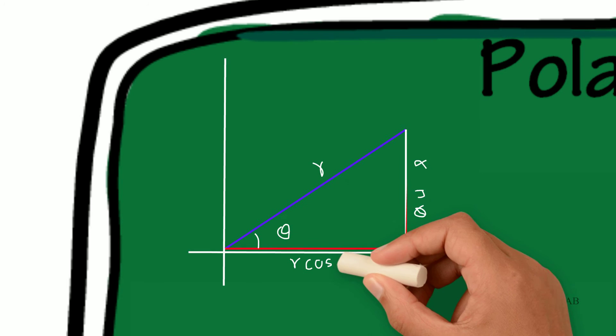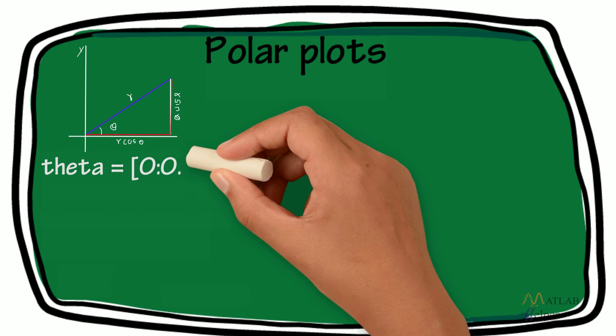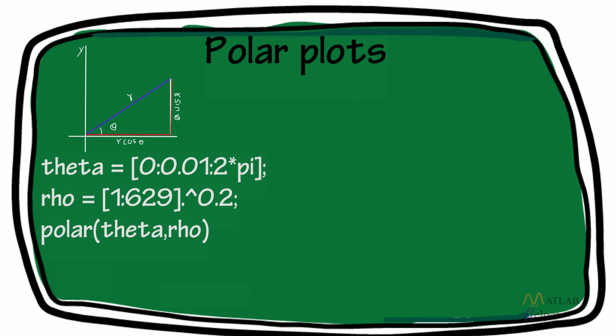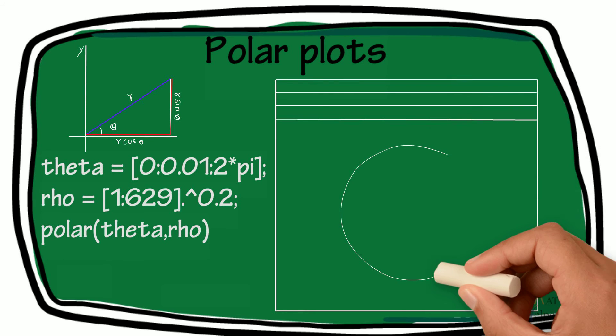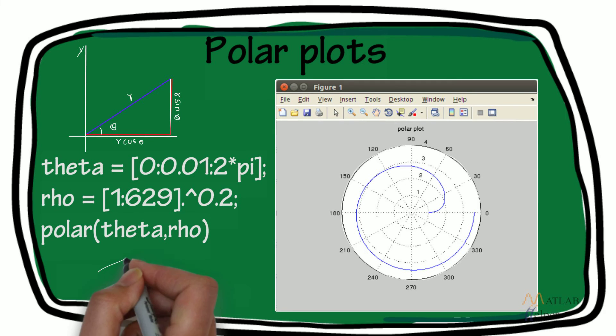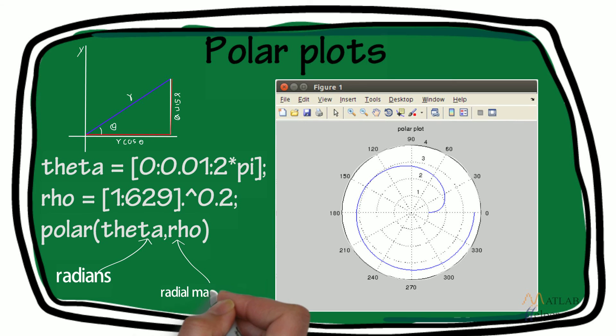Polar plots: Some data is better presented in the form of polar coordinates in two dimensions. For that purpose, polar plots can be used. The function polar needs polar coordinates as inputs and will display the corresponding plot. In the theta-rho pair as input, theta needs to be specified in radians and rho is the radial magnitude.